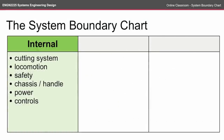The construction of the System Boundary Chart is relatively straightforward. First, we have an internal column — these are all aspects that we think might be included inside the system boundary. For my lawn mower example, I've got the cutting system, the locomotion (how the mower moves), safety, the chassis, the handle, power, and the controls. These are all things that I think will be inside my system boundary.